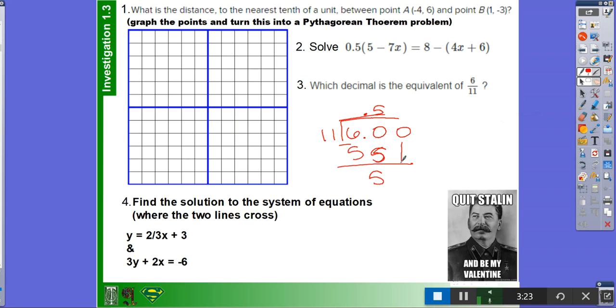And then you add another decimal, and you bring that down. And it goes in four times. 11 times 4 is 44. Then you subtract, and you get 6.